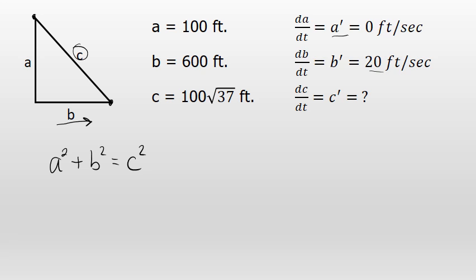We can represent the rate of change of each side by differentiating both sides of the Pythagorean theorem equation with respect to time — an implicit differentiation with respect to T. The derivative of A squared with respect to time is 2A times A prime. The derivative of B squared is 2B times B prime. And the derivative of C squared is 2C times C prime.